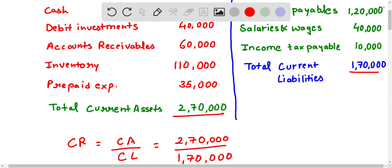So on solving this we will get 1.59 is to 1. So this is our current ratio.